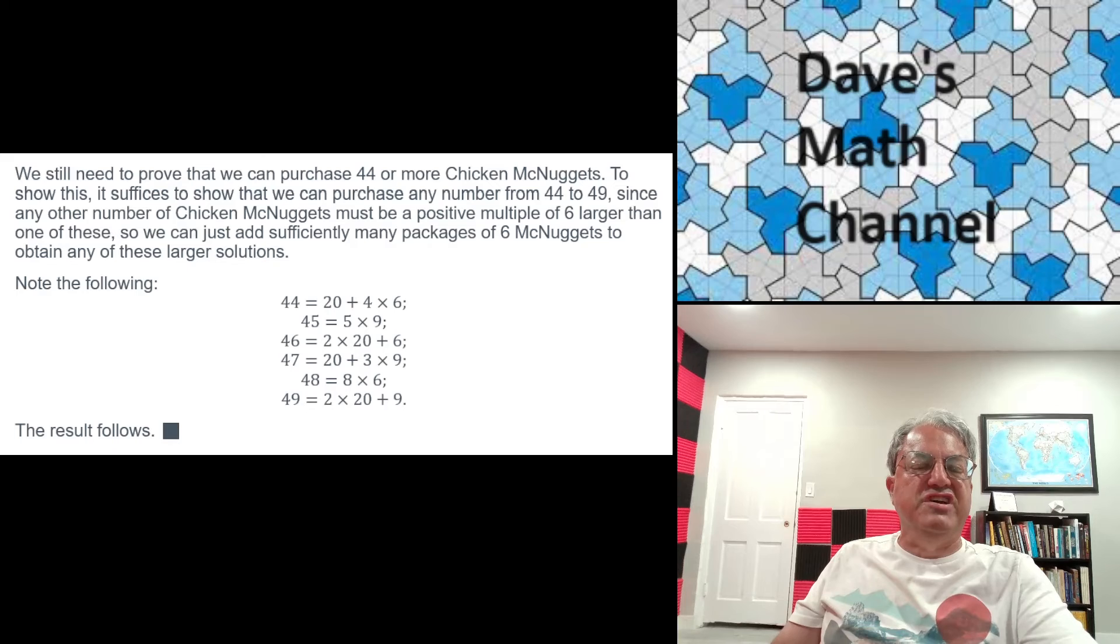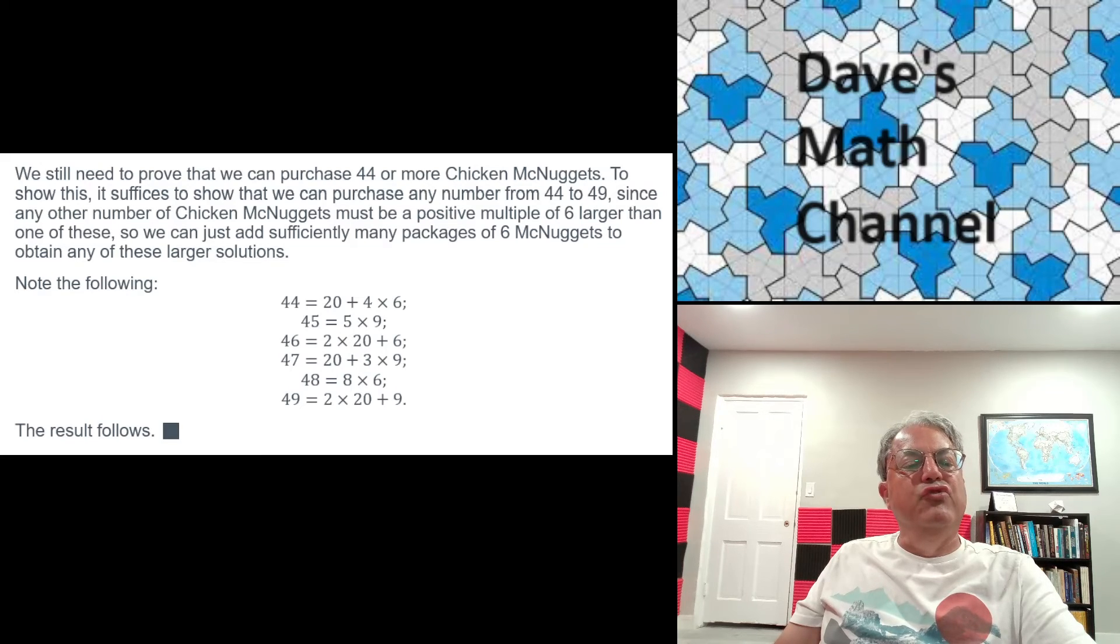And we know we can do that because we can always purchase extra 6 packs if we want. For instance, if we wanted to purchase 50, we could just purchase 44 and then purchase another pack of 6. If you wanted to purchase 100, 100 is congruent to one of these mod 6.